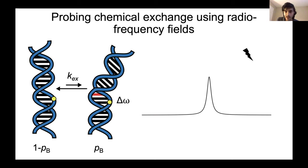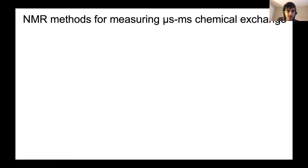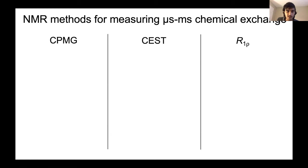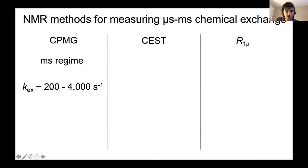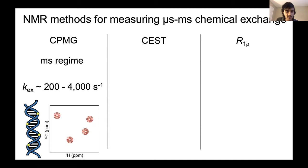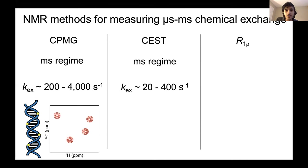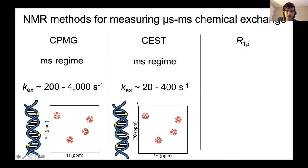There are a variety of NMR experiments for measuring chemical exchange. CPMG (Carr-Purcell-Meiboom-Gill) spectroscopy is useful for millisecond timescale dynamics, with exchange rates on the order of a few thousands per second, and can be done on all nuclei in a molecule simultaneously. CEST (chemical exchange saturation transfer) is suited for slightly slower exchange rates on the order of hundreds per second, and similarly covers all nuclei at once. Both contrast with R1 rho relaxation in the rotating frame.